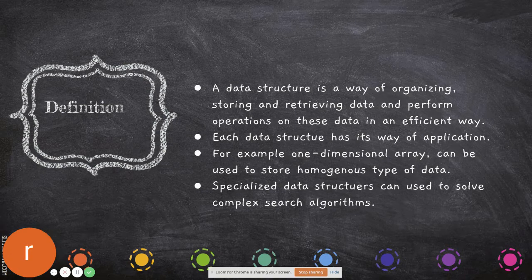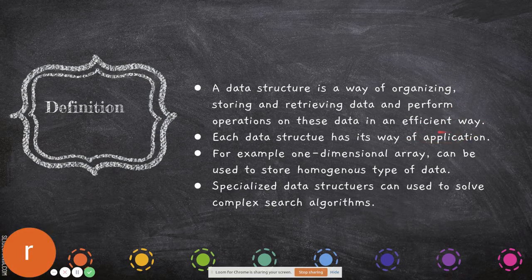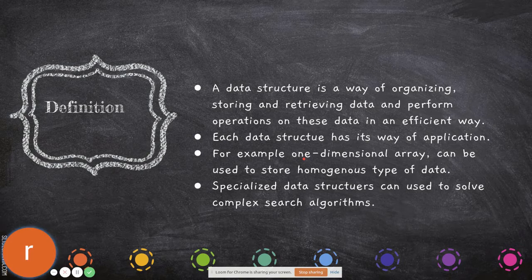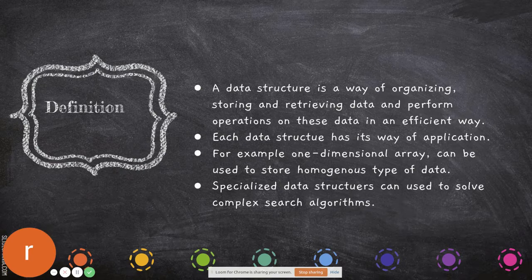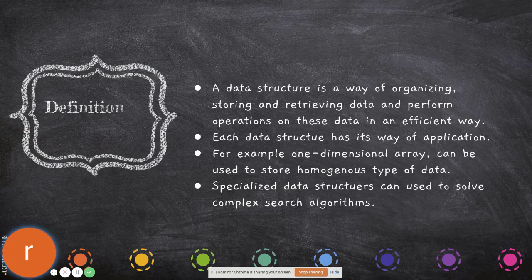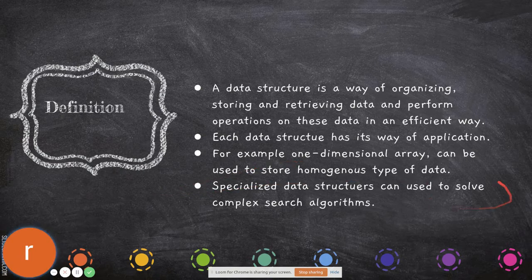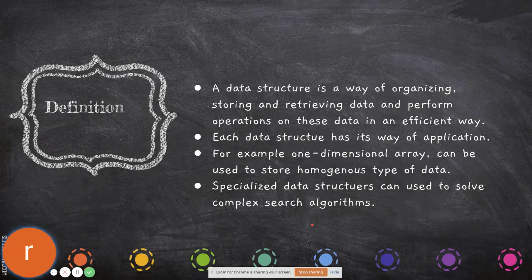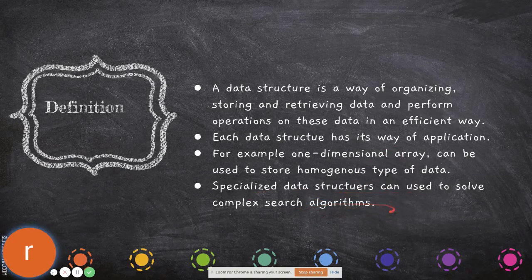Each data structure has its way of application. For example, a single dimensional array can be used to store homogeneous data - data of the same type. If you declare an array of integers, all the data will be integers. If you declare a floating point array, all values will be floating point. Specialized data structures can be used to solve complex search algorithms, like hash tables.